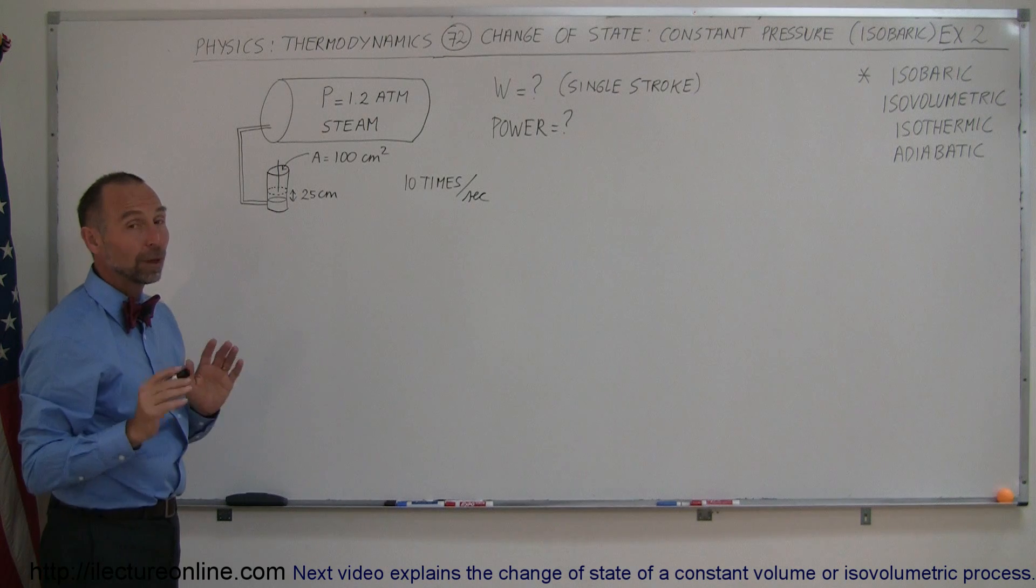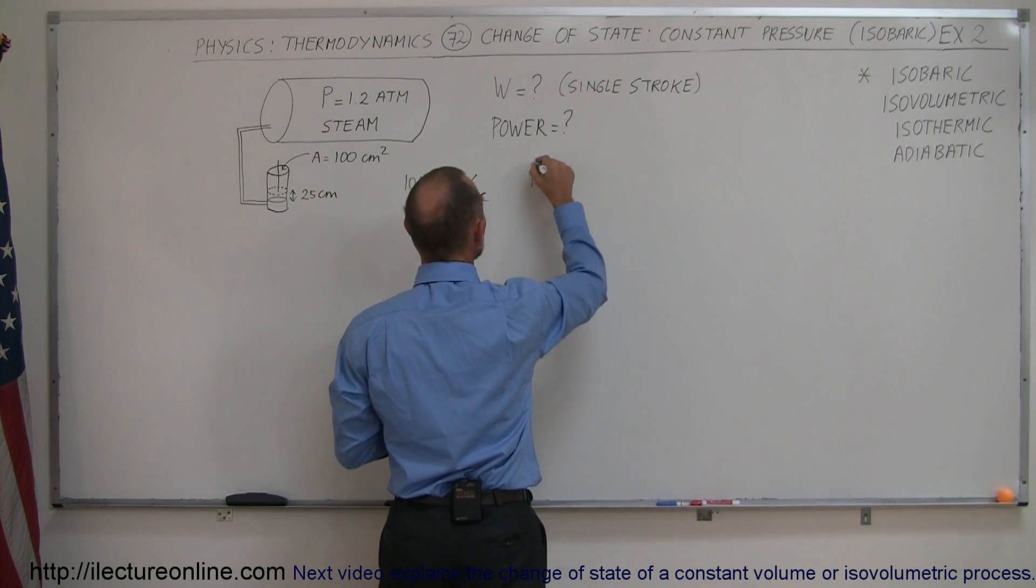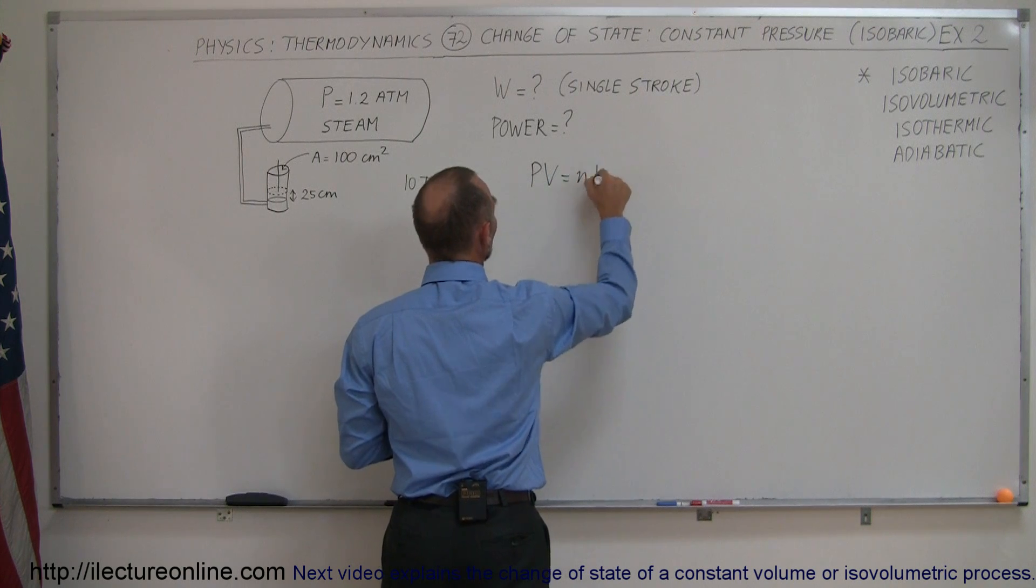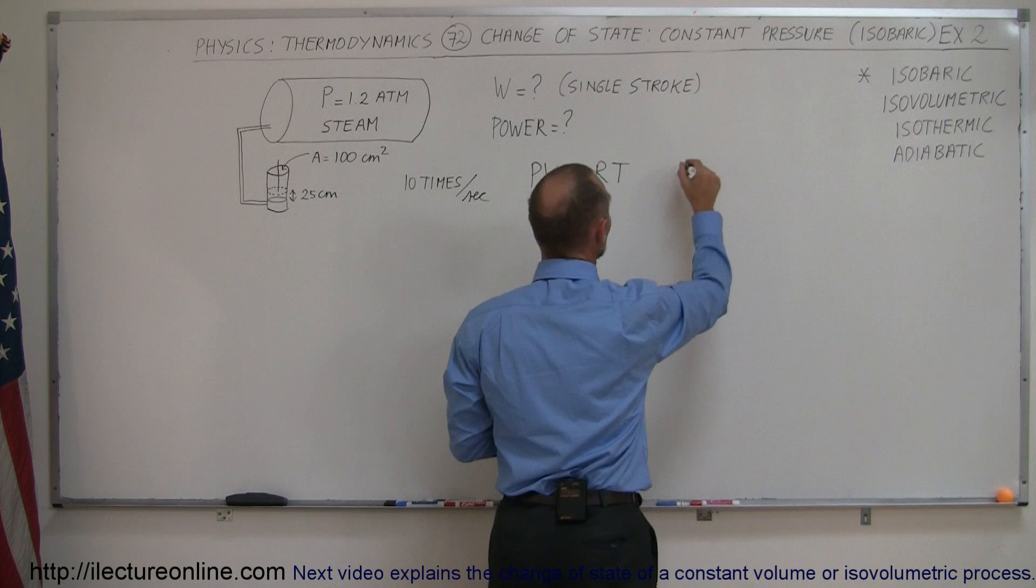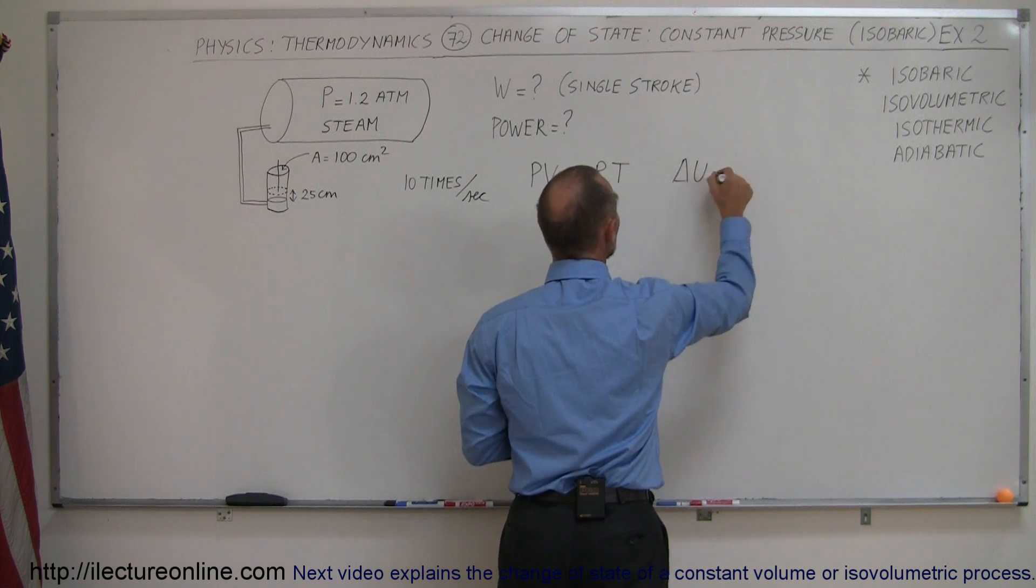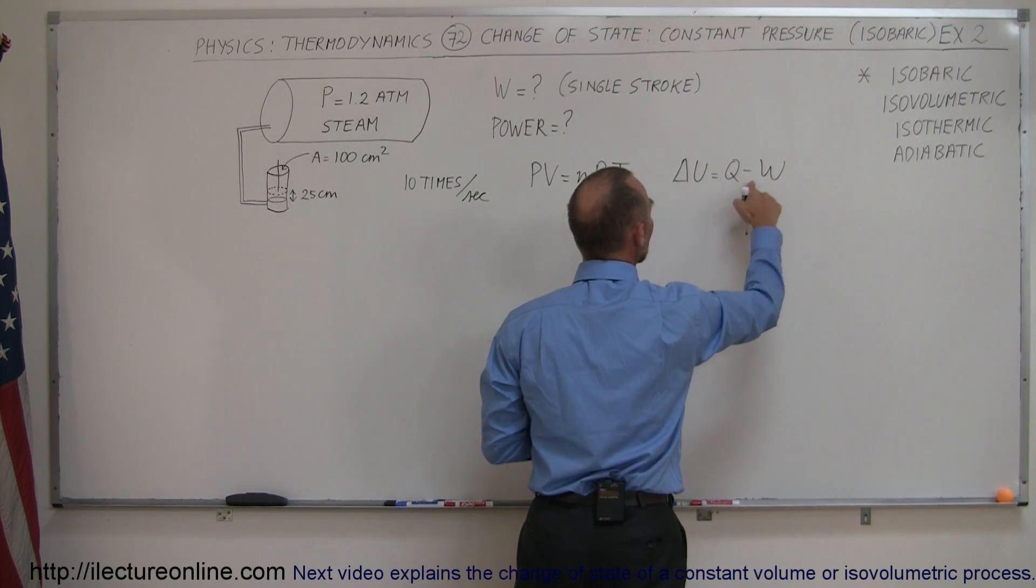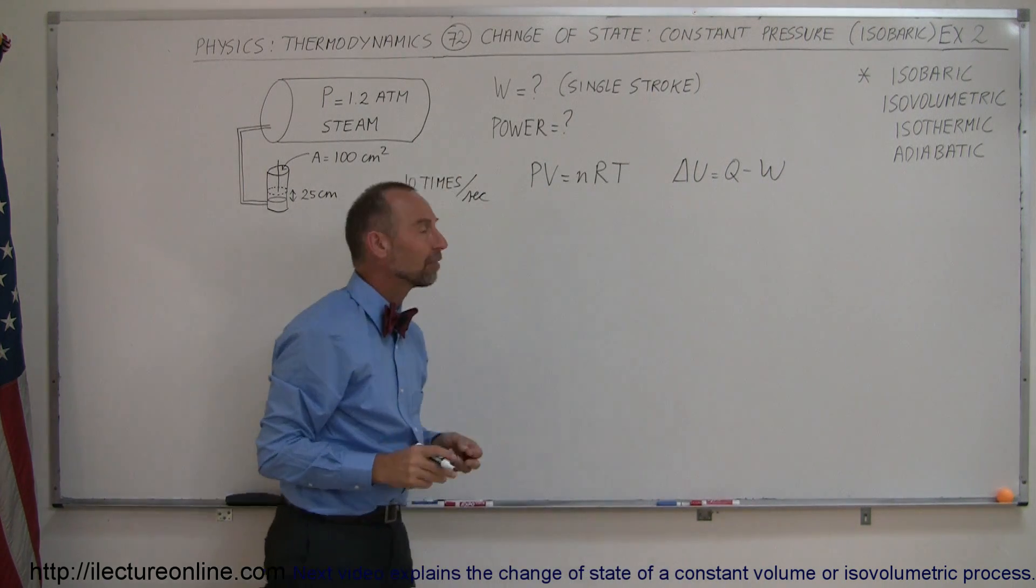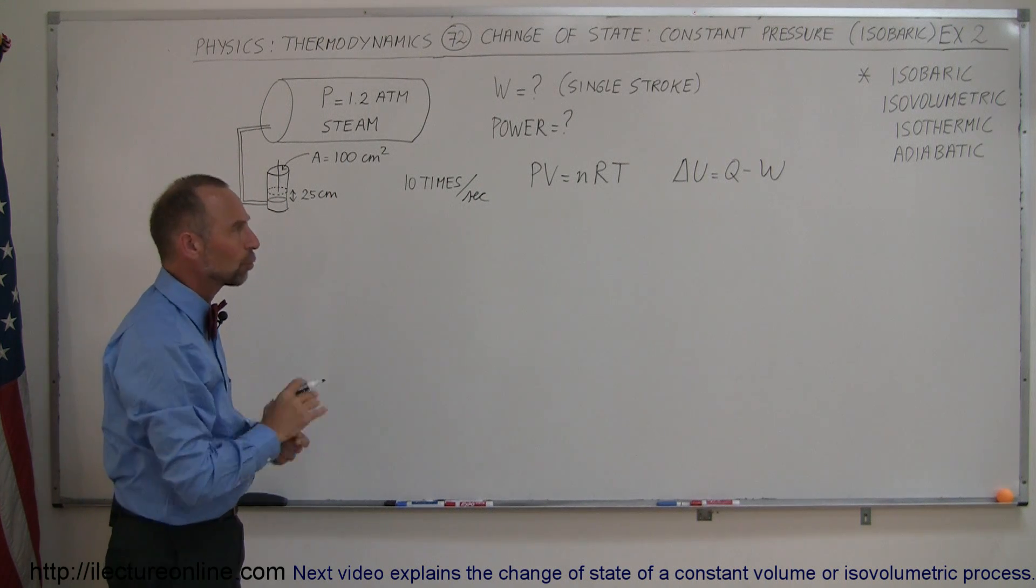So, how do we figure that out? Well, the two equations you always want to have close at hand is the PV equals NRT equation. And then, of course, the first law of thermodynamics, which is the change in internal energy is equal to Q minus W, which means the heat added to the gas minus the work done by the gas. Now, in this particular case, you probably don't need them, but I would always write them down.